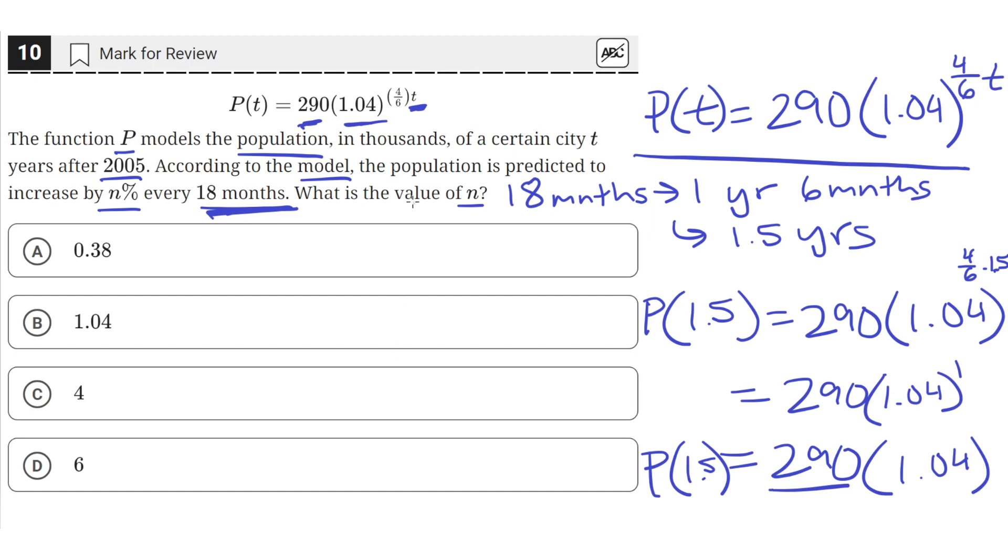So now that we know that the population initially is 290,000, the population after 1.5 years is 290,000 times 1.04. That's a 4% increase because we're multiplying by 1, but the 0.04 increases it by 4%. So that means n%, the value of n, is just 4. So C is the correct answer.